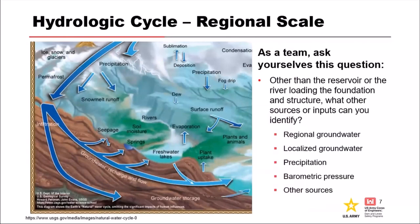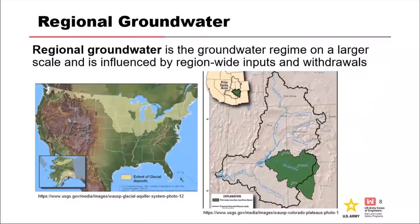On a regional scale, understanding how your project fits into the large-scale hydrologic cycle is an important first step in characterizing the site. As a team, ask yourselves: other than the reservoir or river loading the foundation and structure, what other sources or inputs can you identify? Some general sources we'll talk about include regional groundwater. I'll define a couple of basic terms — these are two examples of what a large-scale regional approach to groundwater looks like.